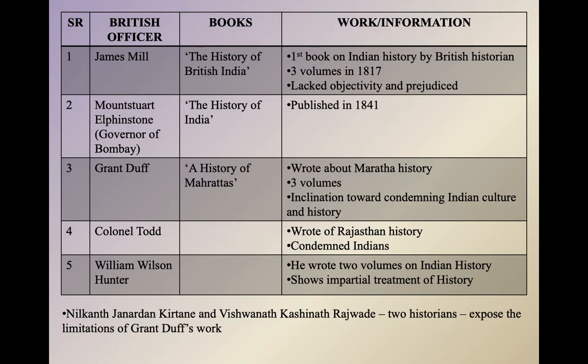Here is a small chart to help you remember which British officer wrote which book and what information we get through these books. The first is by James Mill, who wrote The History of British India — the first book on Indian history by a British historian. It has three volumes and was written in the year 1817.